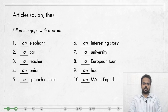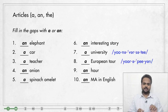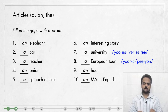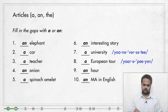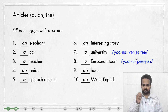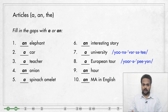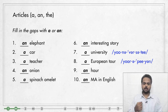I want to focus on items number seven to ten because these are a little tricky. Number seven is A university, because even though university starts with the letter U, the first sound of the word is not a vowel sound. We don't say 'university' — we say 'university.' That first sound is a Y sound, which is a consonant sound, so we say A university. Number eight is similar — the word European starts with a Y sound, so A European tour.